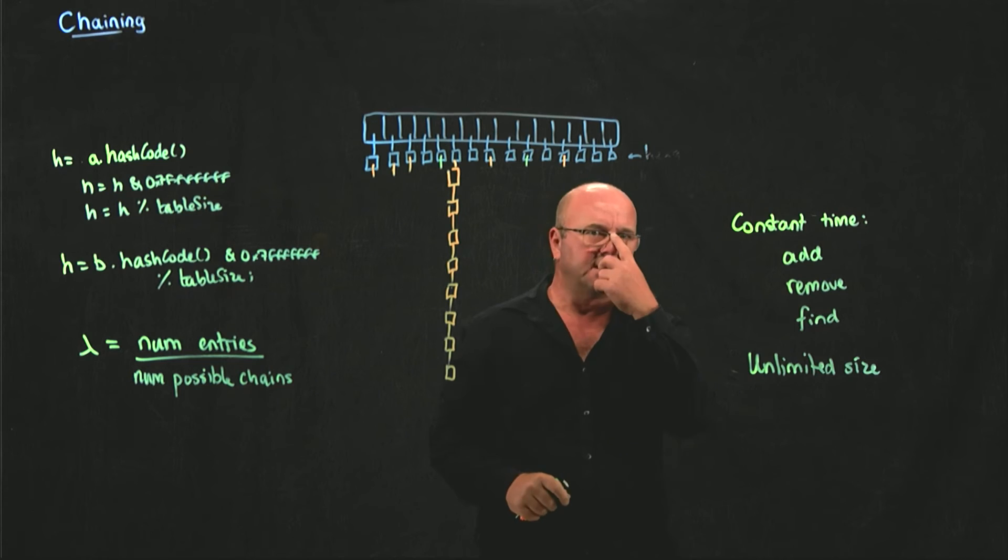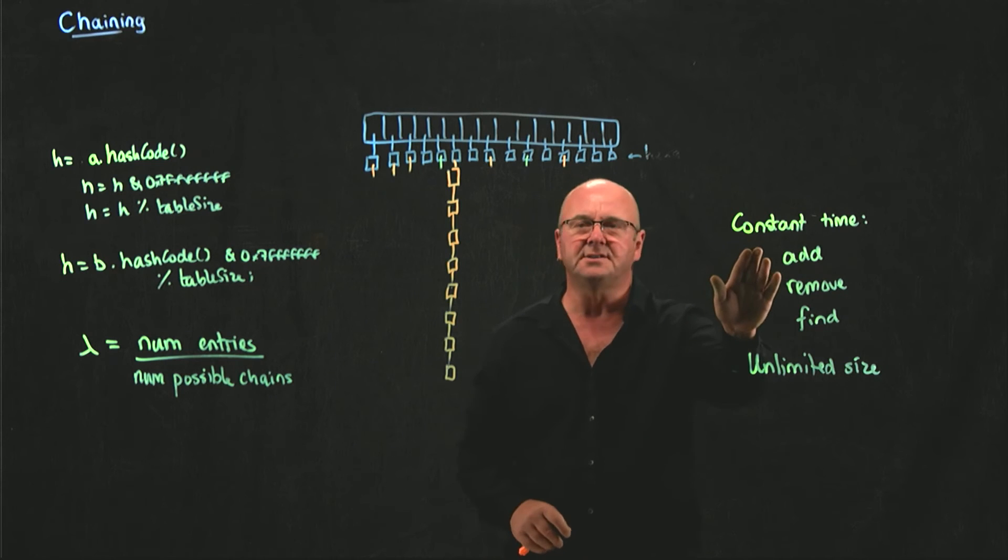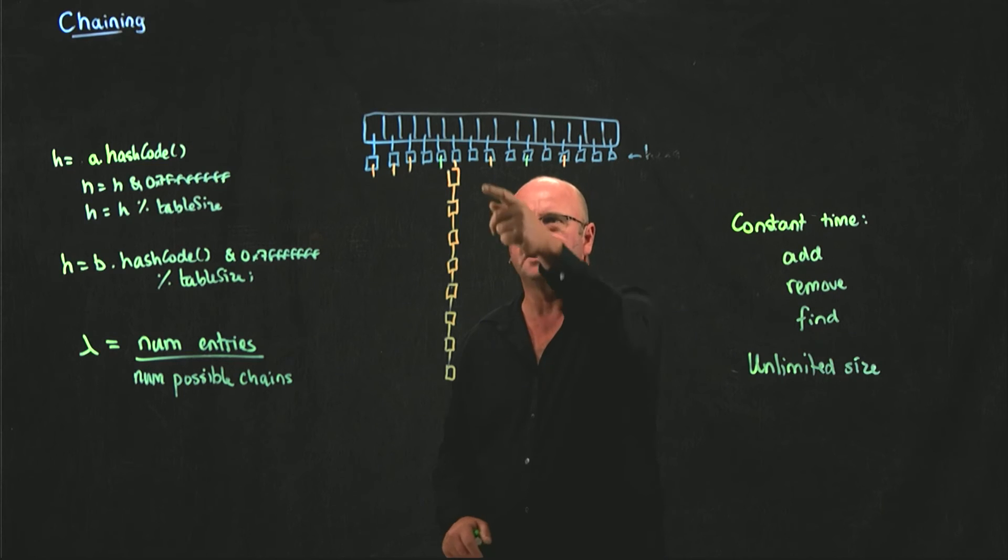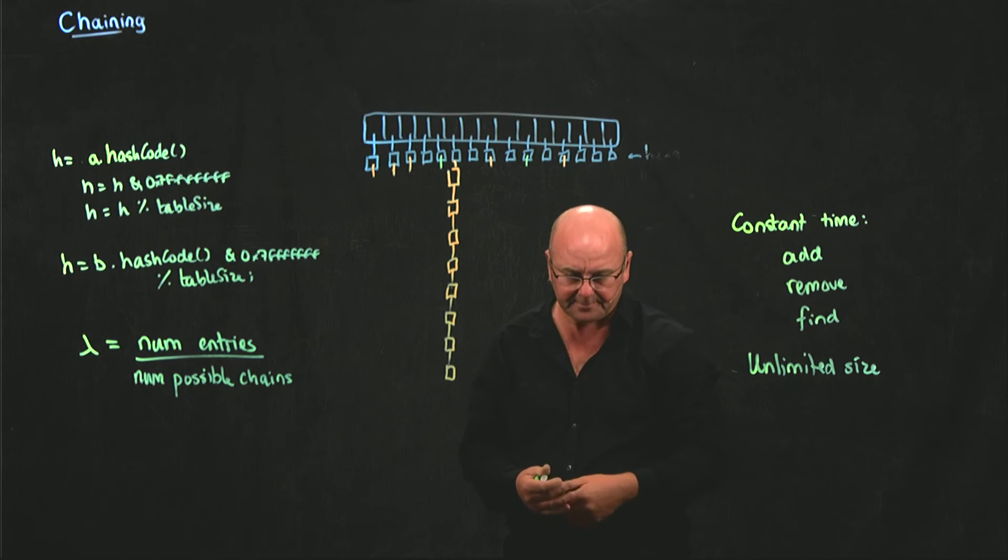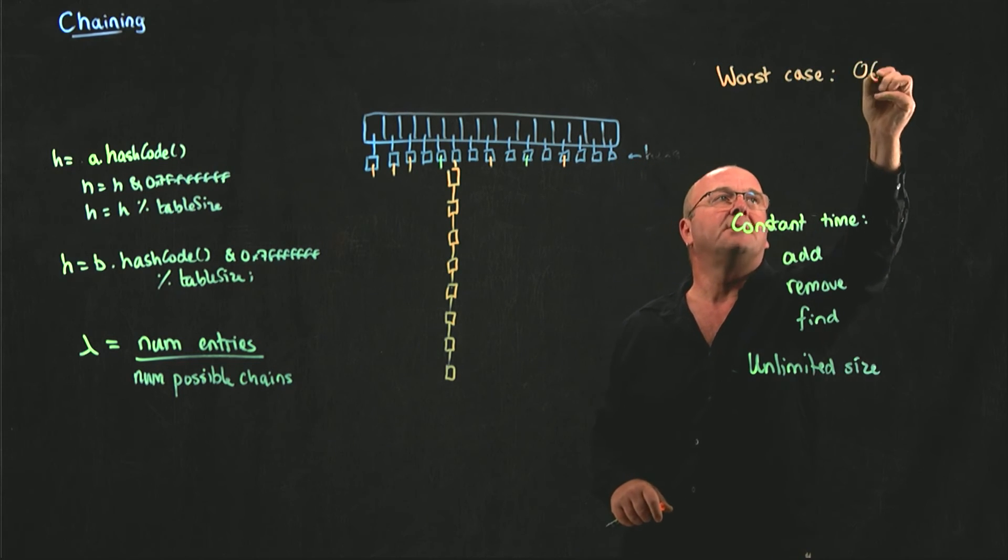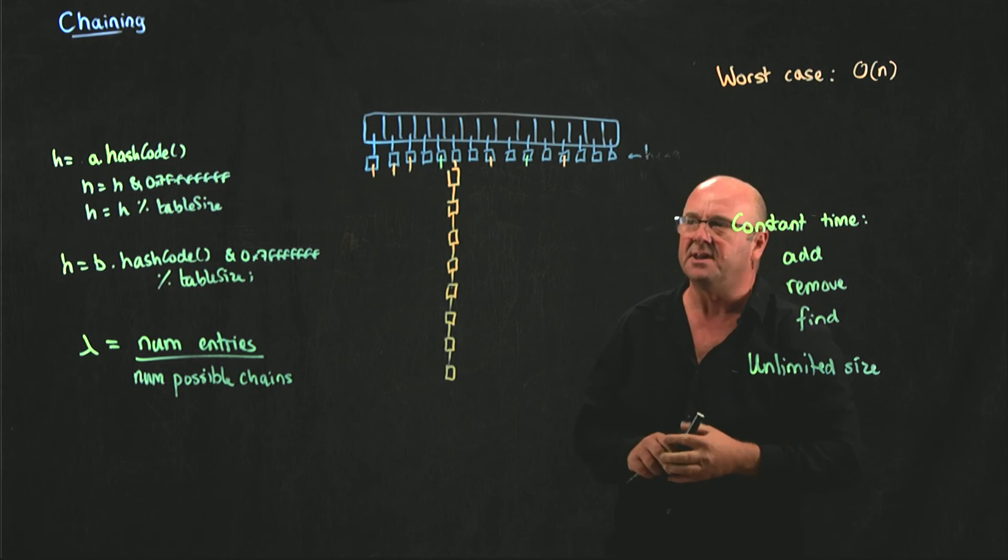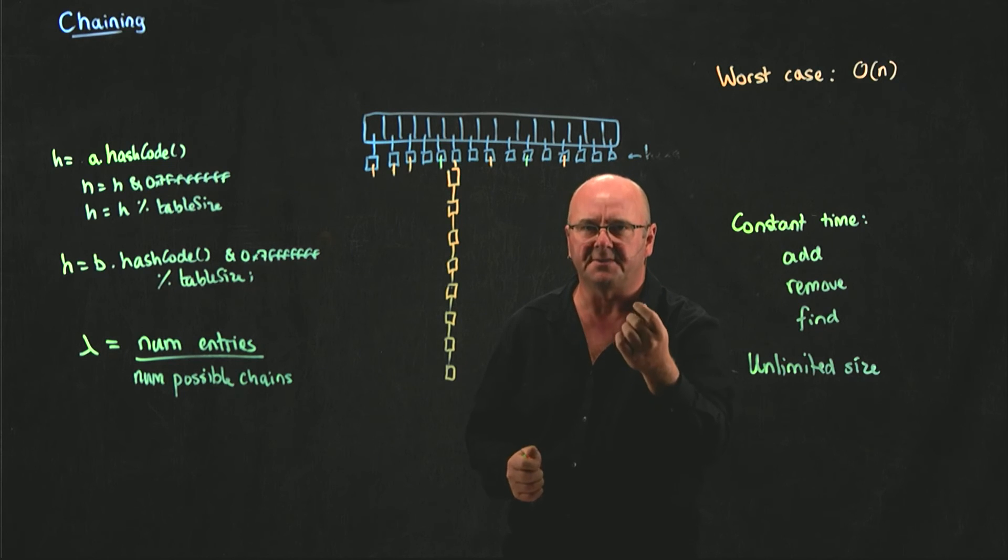And so, the complexity now of, for example, finding things or removing things from this hash goes from constant time to big O of n. Because now what I do is I say, okay, I'm trying to find something in my hash. Here's the entry where it needs to be. Now I have to look through the entire chain to find something. So the worst case for chaining, the worst case is we're going to be big O of n. We run the risk of being big O of n if our hash code returns the same number every time.